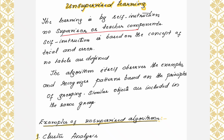What do we mean by no supervisor or no teacher component? In supervised learning, you have mentioned all the values in the output label, and the job of the model was to map the input with the output. The output label is also mentioned in the dataset. Here in unsupervised learning, you are giving the dataset without any labels. The model has to learn by itself — there is no output label component present in the dataset.